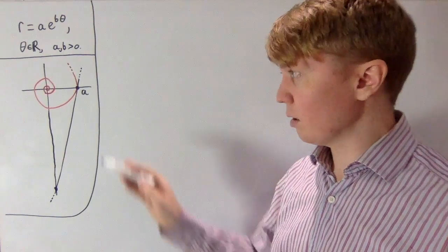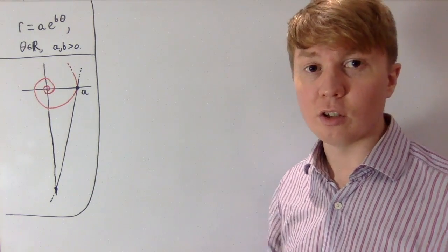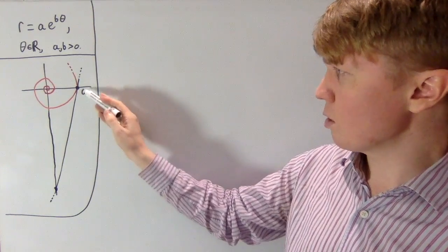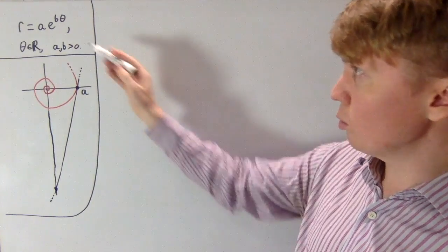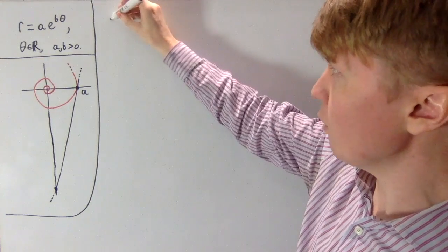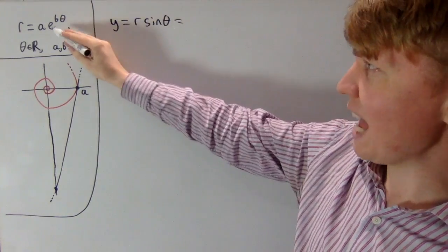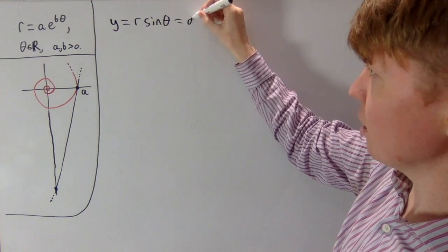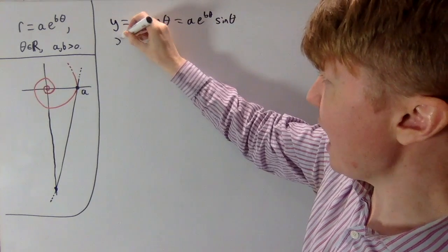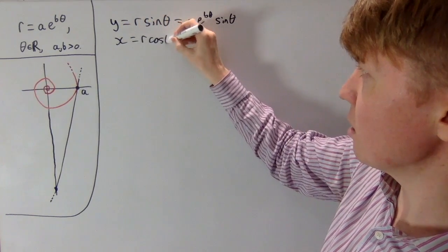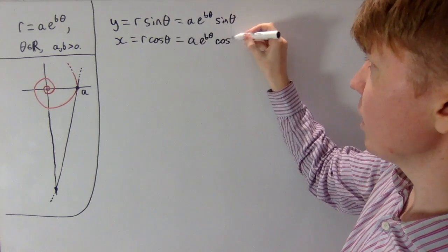To find the length of the tangent, we start by finding the equation of this line in Cartesian coordinates. We know it passes through the point, so we need to find the gradient dy/dx. We can write y = r sinθ = ae^(bθ) sinθ, and x = r cosθ = ae^(bθ) cosθ, getting both as single functions of θ.